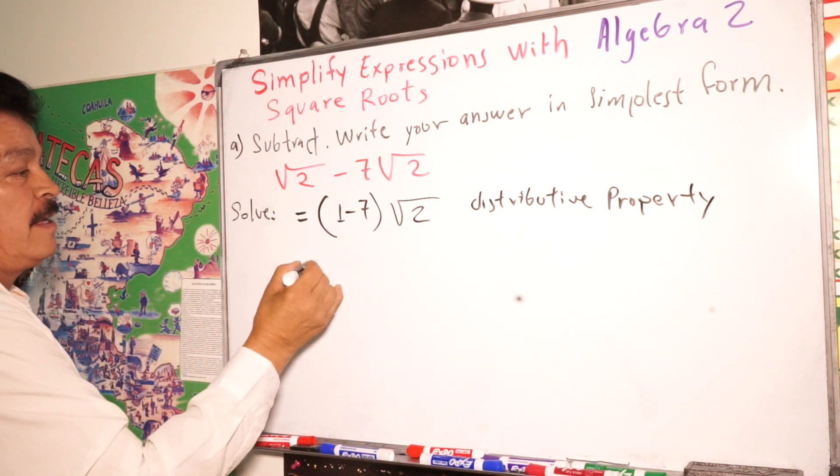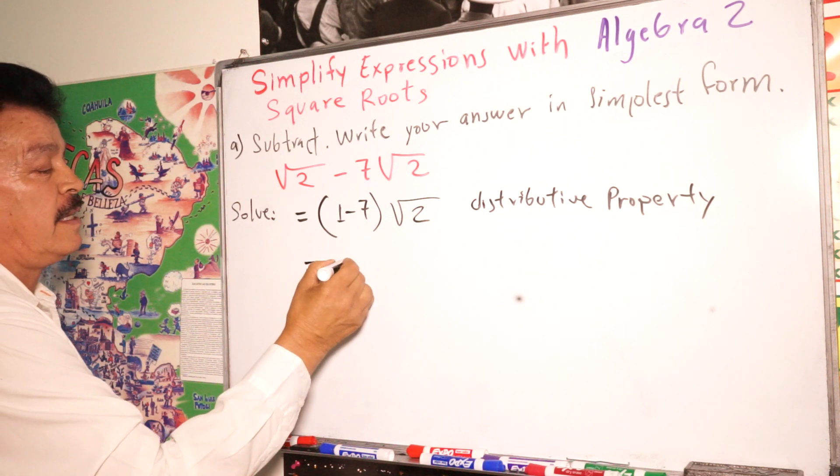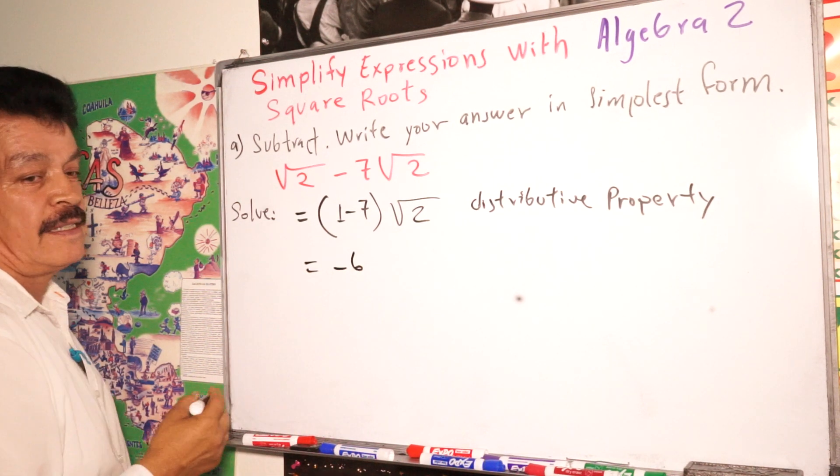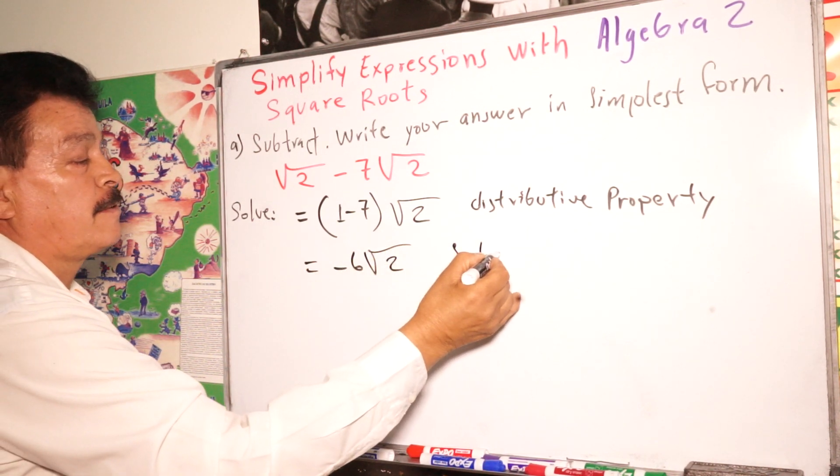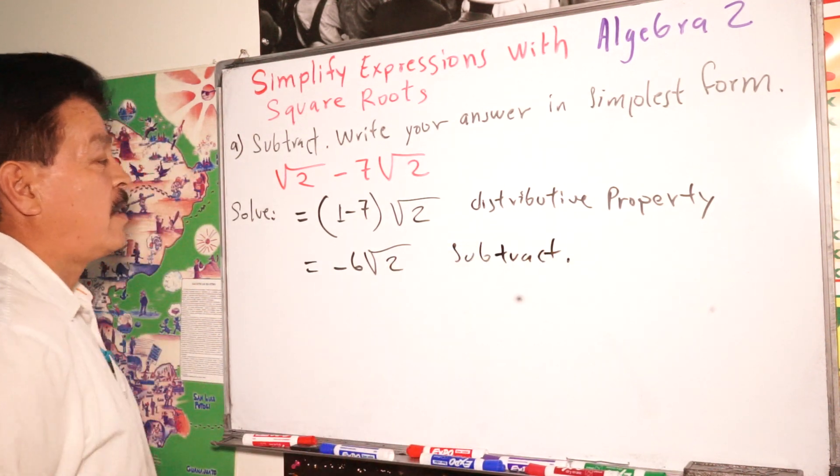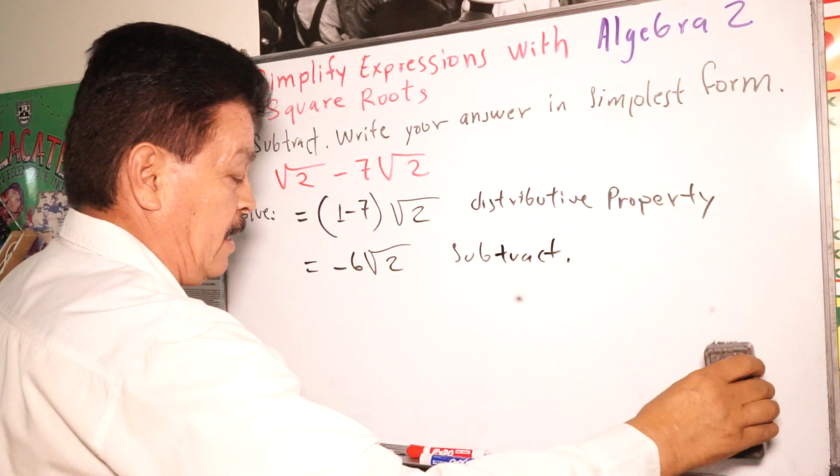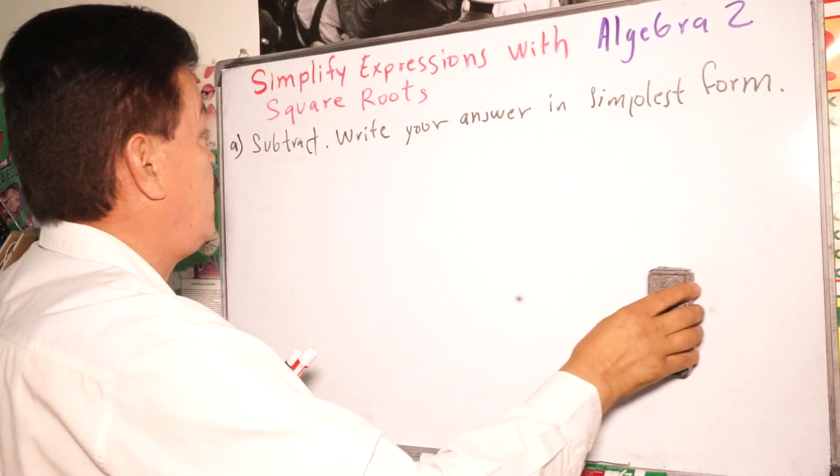Next, just simplify. It's positive 1 minus negative 7, it's negative 6 times square root 2. This is subtract. So that's it. Let's see another problem here.